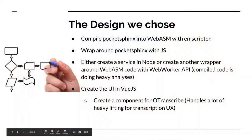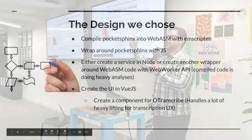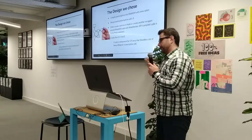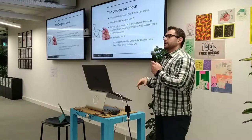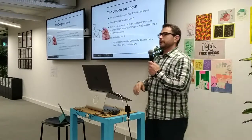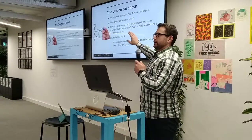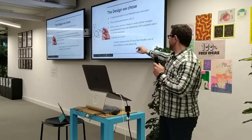The design we chose right now is to compile everything into WebAssembly with Emscripten, and wrap around PocketSphinx compiled with JavaScript — because Emscripten just provides bindings, but you have to make it asynchronous, so there's another wrapper on top of that. Then either create a service in Node that runs it and talks with the frontend, or run everything in the browser. On top of that, we plan to create the UI in Vue.js.